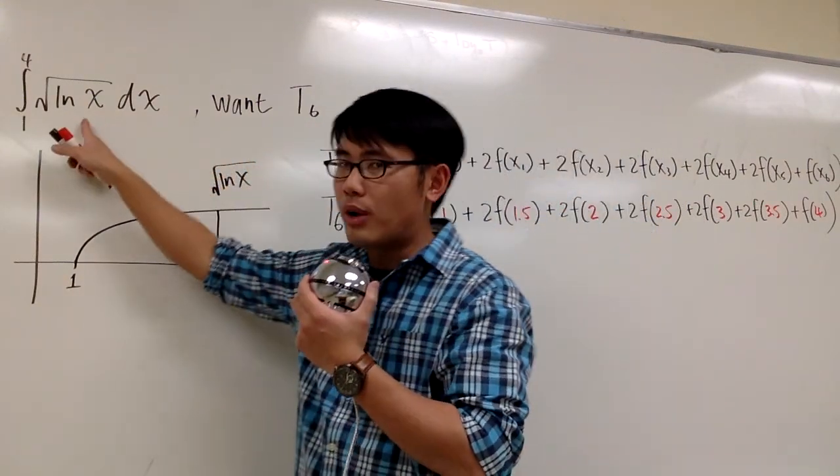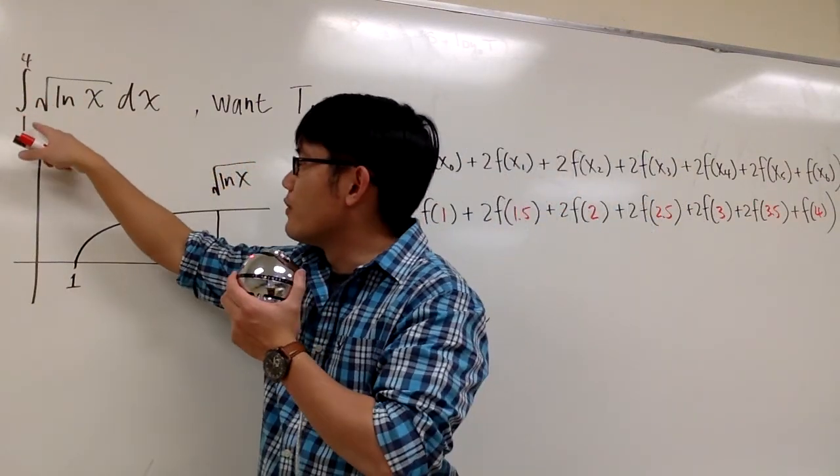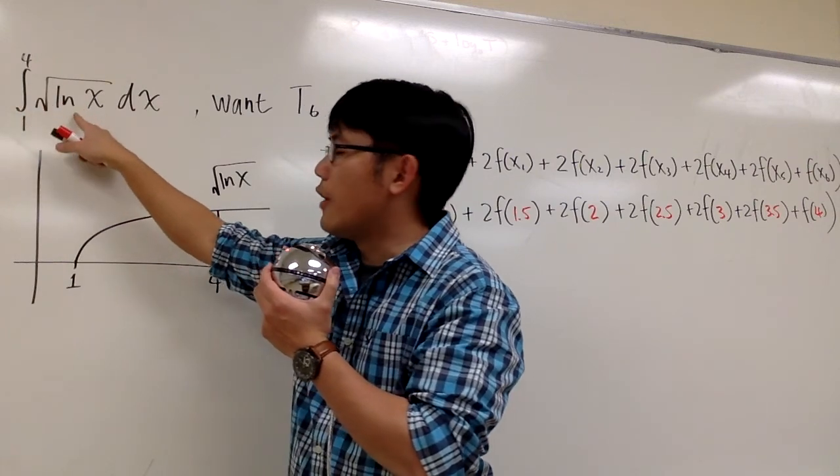We are going to use six trapezoids to approximate this integral, the integral from 1 to 4 of square root of ln x dx.